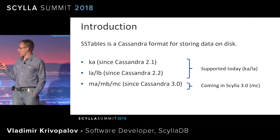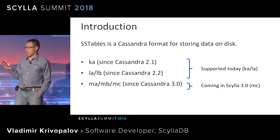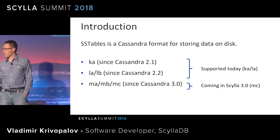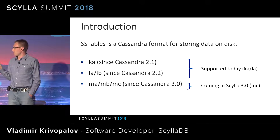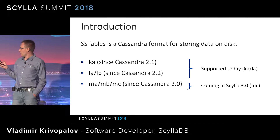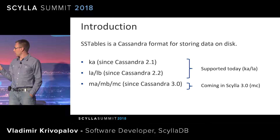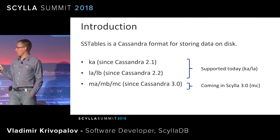The existing released versions of Scylla support formats KA and LA. Those two formats store the data in the same format — they are pretty much the same, except they only differ in the way they name files. The MC format, which is going to be introduced in Scylla 3.0, is a complete revamp of the data storing format. I want to talk about why we need this, what it brings us, and what are the user-facing benefits.